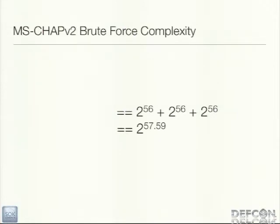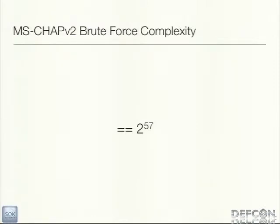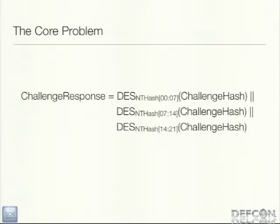If we go back and look at our total complexity, we've reduced the additive complexity to 2^56 + 2^56 by basically eliminating the third key, for a total of 2^57. That's still a pretty big number. So we're dealing with these two DES encryptions, and something interesting is that the plain text is the same in both cases — for both DES encryptions, we're encrypting the same thing.